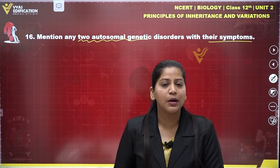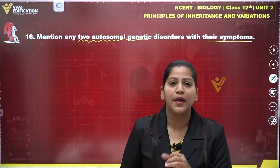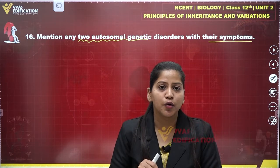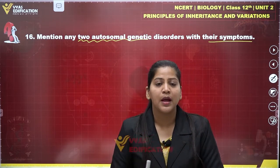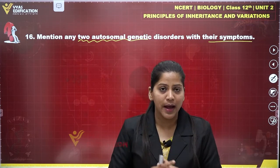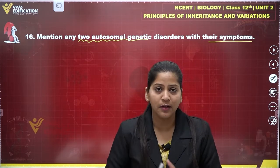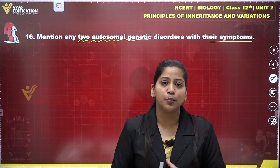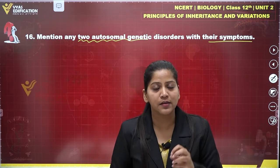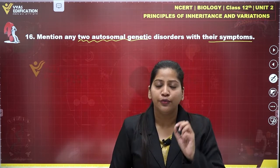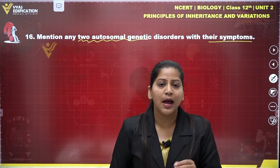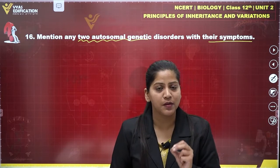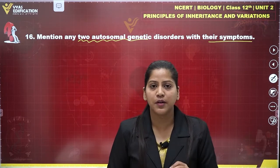Talking about the symptoms of Down syndrome: the affected person has a short stature along with a small round head, furrowed tongue, and a broad palm with a characteristic palm crease. Physical, mental, and psychomotor development is also retarded in persons with Down syndrome.